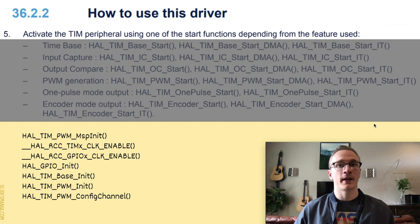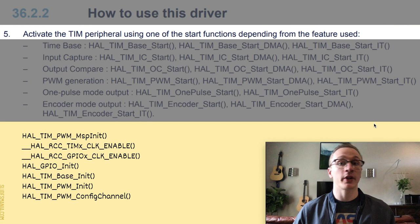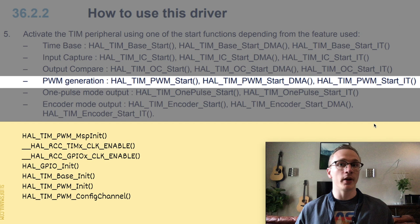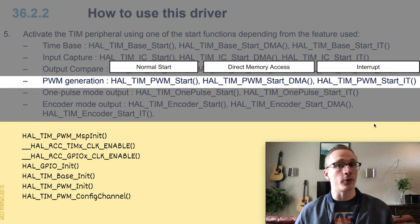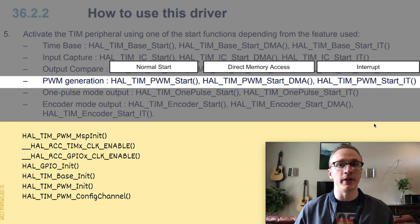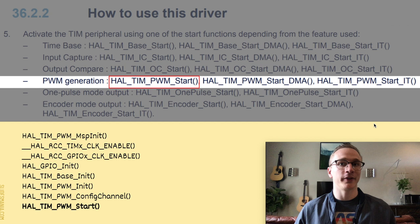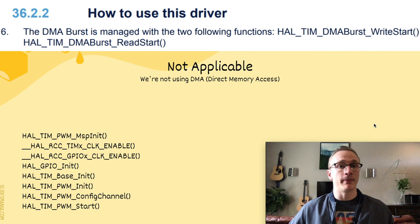Step five: now it's time to activate the timer peripheral, so we're going to use one of the following start functions. Since we're using PWM we want to use one of the PWM start functions — they list three options: a normal start, start with DMA, and start with interrupt. Direct memory access and interrupts are more advanced ways to use PWM, but we're just going to stick to a normal start. Step six describes DMA Burst, and since we're not using direct memory access we can skip this step. Now we have a list of all the functions we need to call to get PWM set up.